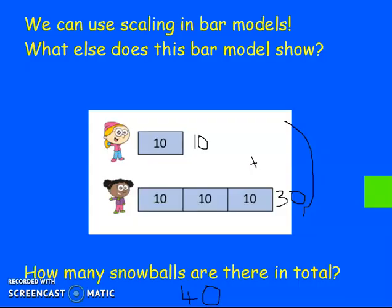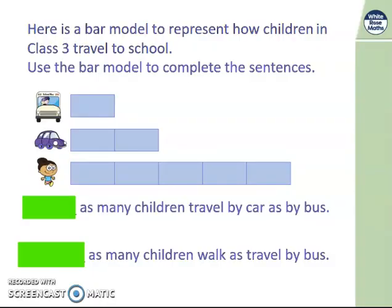Let's move on to the next question. So this is a really tricky question and it is a word problem as well. So here is a bar model representing how children in class 3 travel to school. Use the bar model to help us complete the sentence. As many children travel by car as by bus. So let's say how many children travel by car. So here is car and here is bus. So how much more does the children travel by car than bus? We can say that twice as many children because it is two times more than bus. So twice as many children travel by car as by bus.